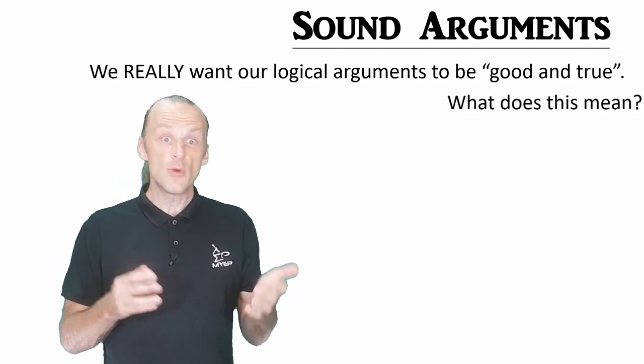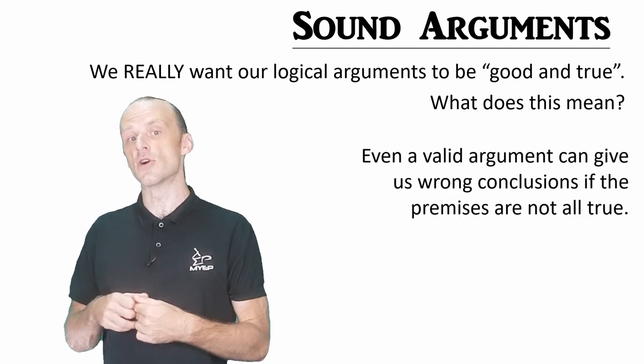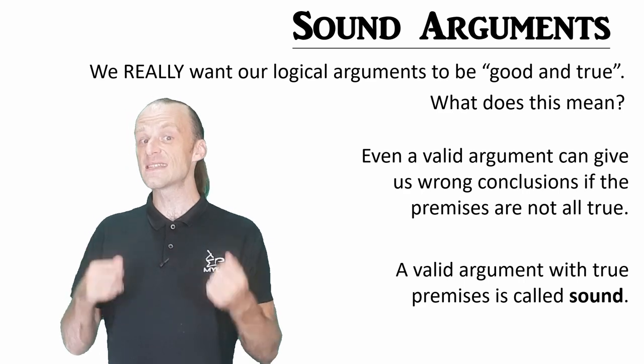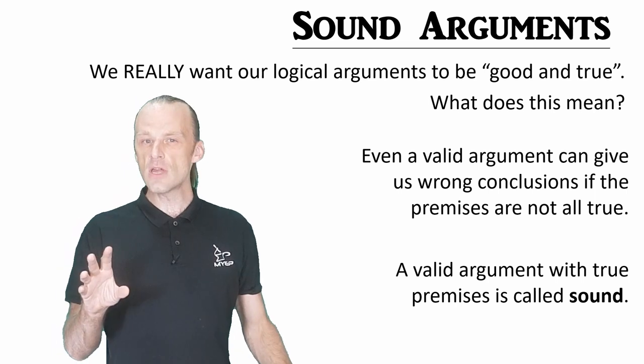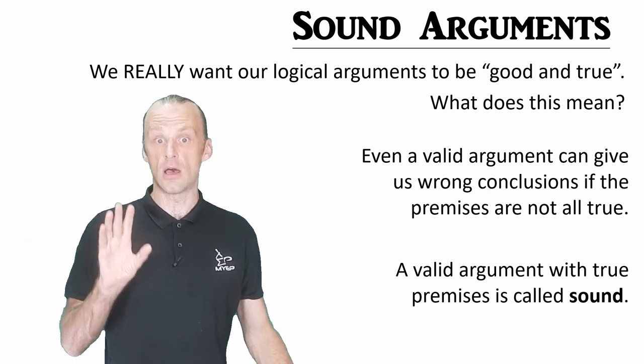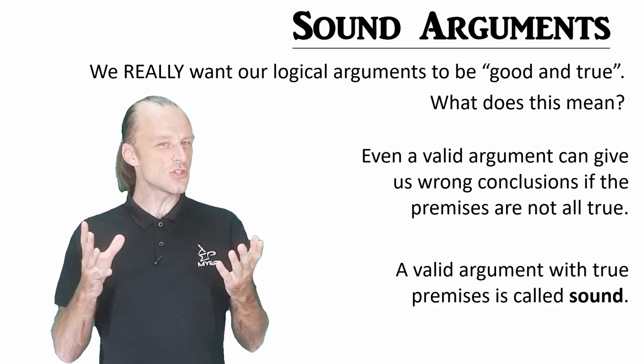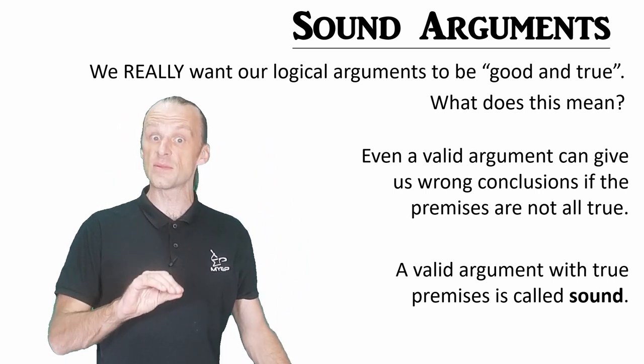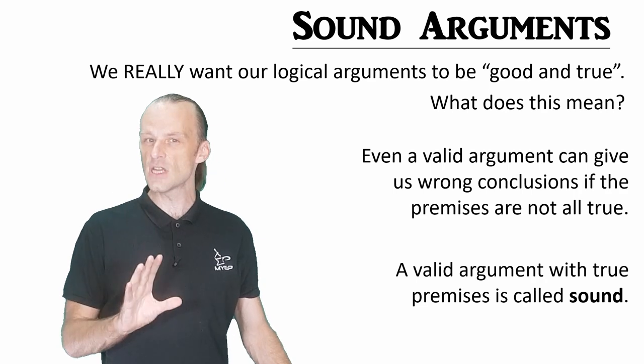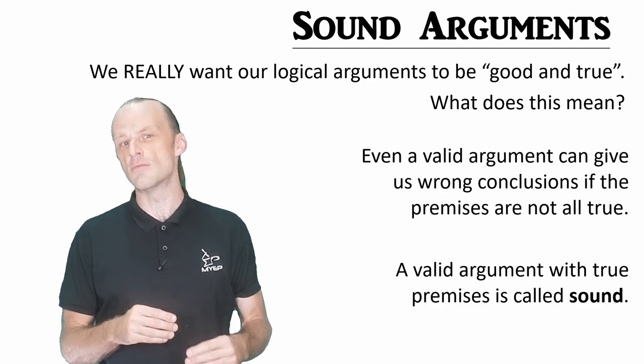We really want our arguments to be good and true. We have seen that even a valid argument can lead us to error if the premises are not true, so this is what we will call a sound argument, a valid argument with true premises. Sound arguments are our best version of a good argument, but sometimes getting people to recognize a sound argument is not just as easy as showing them the premises. A sound argument that is clear and understandable to the audience is sometimes called a cogent argument, but we'll see that cogent has a special meaning in a few moments.